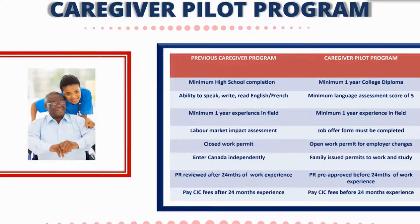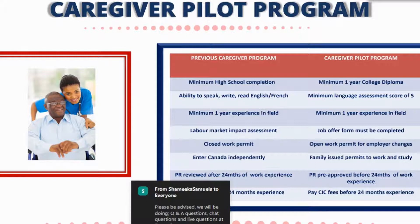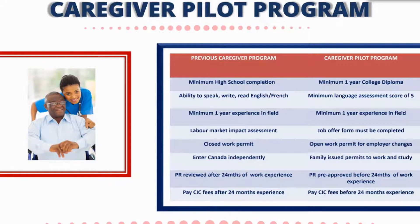A labor market impact assessment is no longer required — this is a great change. You don't have to advertise or go through the long processing time. You just need an employer who is willing to give you a genuine job offer and sign off on the form. The form includes their address information, who the care will be provided for, salary offered, hours, and payment frequency. It's very standard.